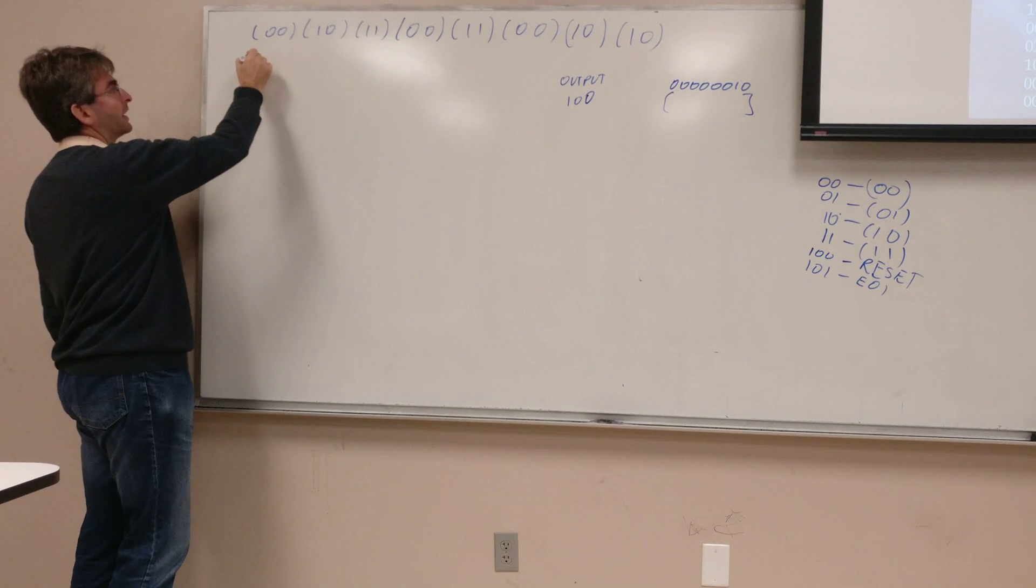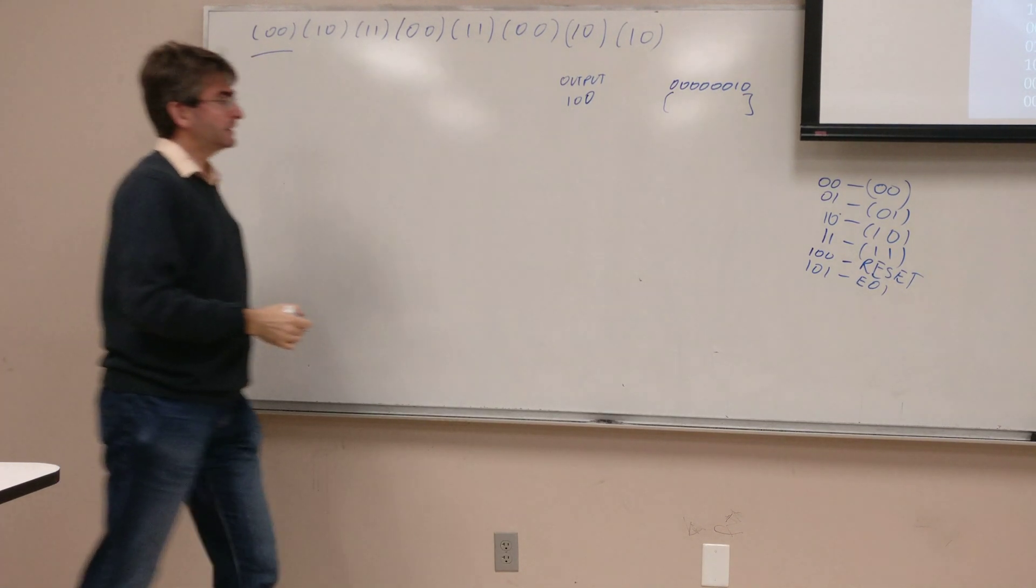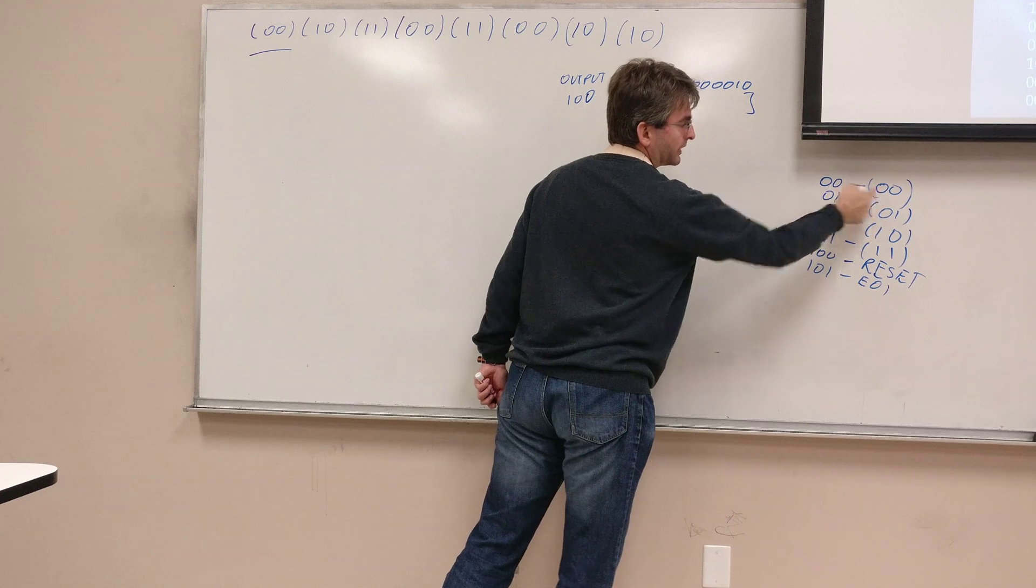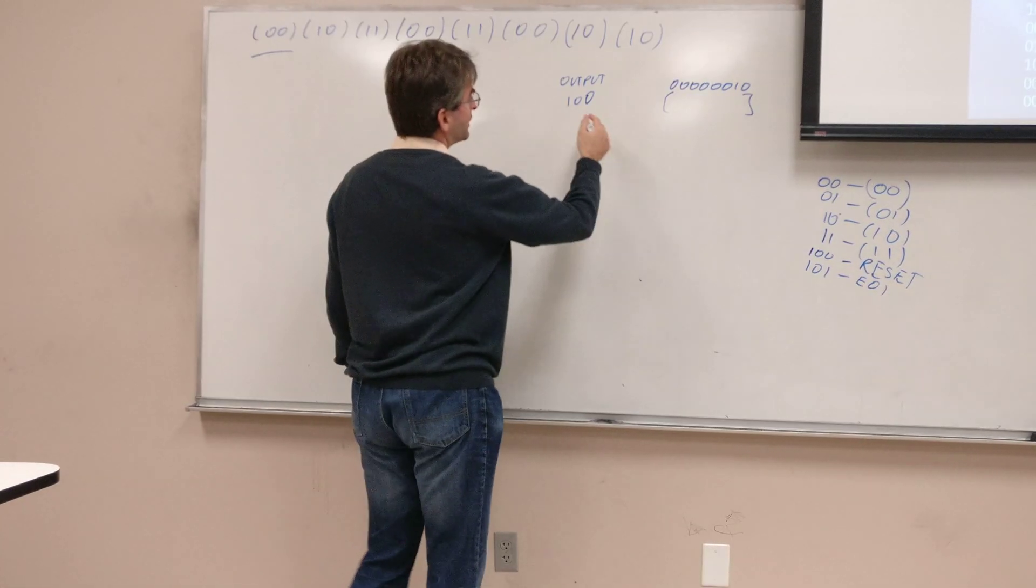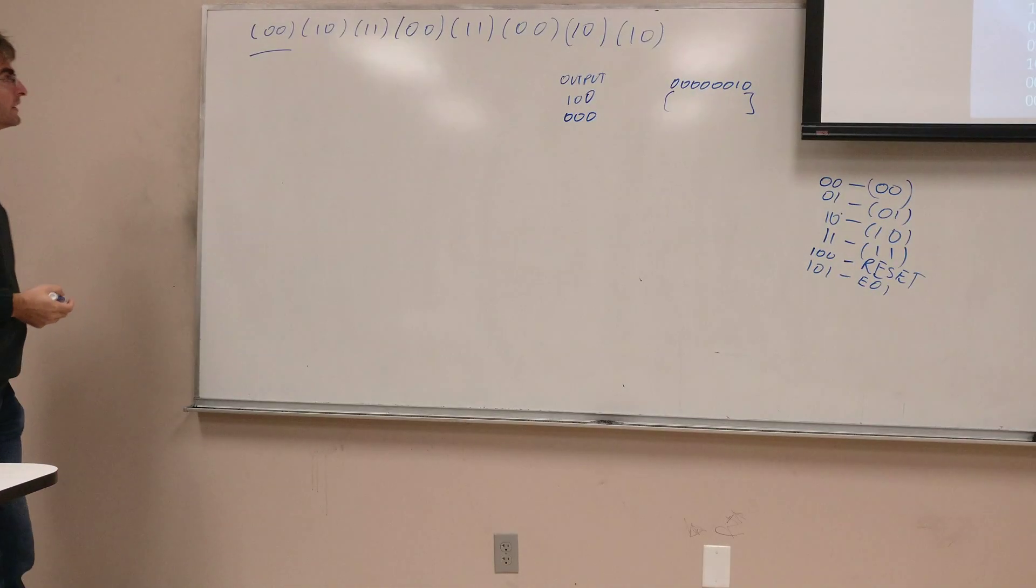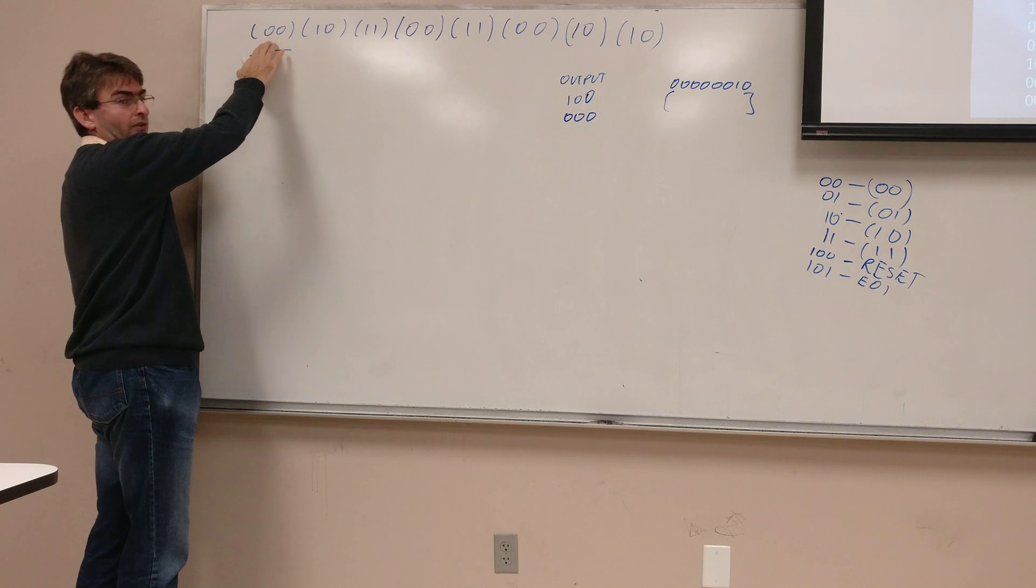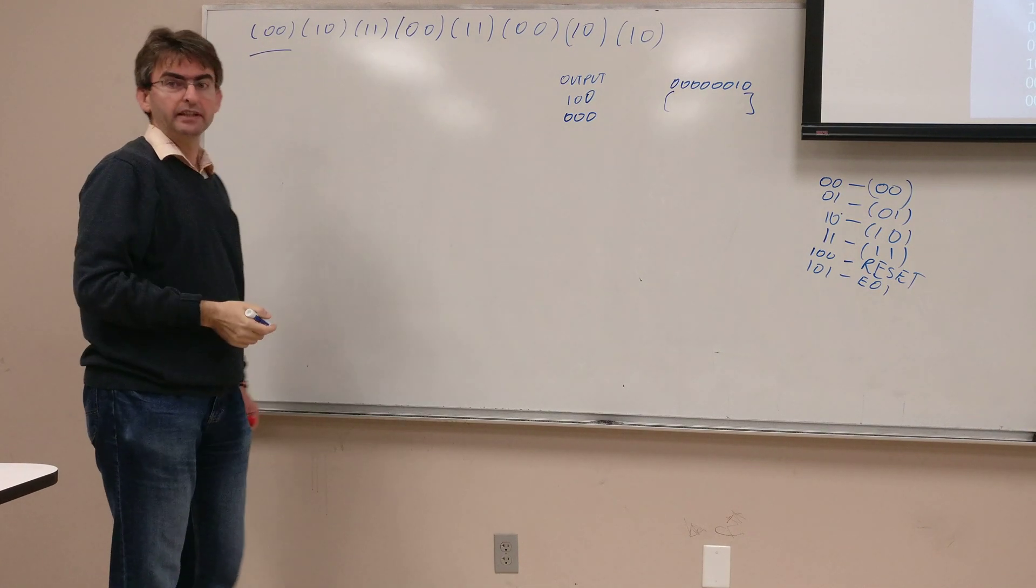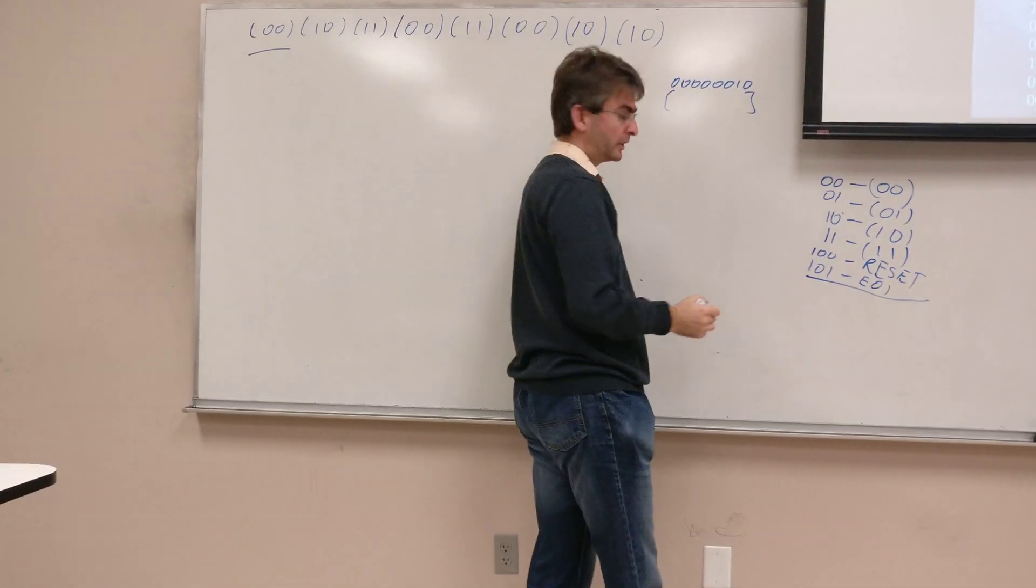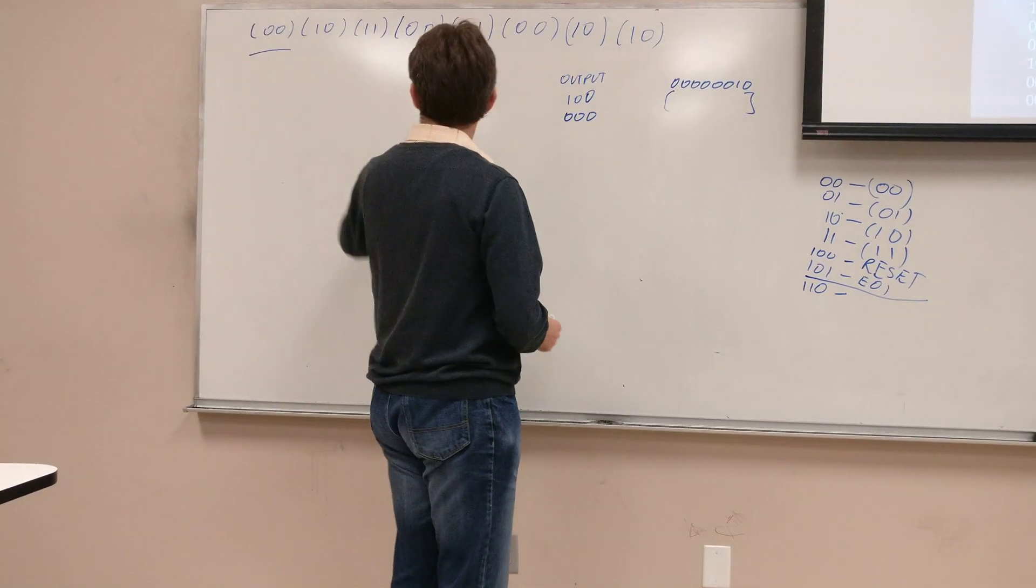So we are going to start now compressing 00, we see it, we are going to output the code. What is the code for 00? It's 00 but we'll have to output on three bits because now we are in the current mode three bits. And we are going to define an additional dictionary entry because we encounter the sequence 00 10 for which we didn't have a dictionary input, so I'm going to start adding new dictionary entries here. 110 is a new one, first created for the sequence 00 10.